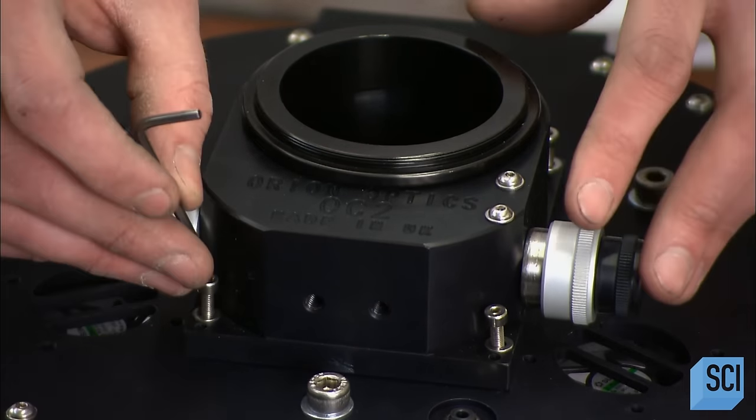Next, he uses ring gauges. If the fastener screws into the no-go gauge, the dimensions are wrong. If it screws into the go gauge, they're correct.